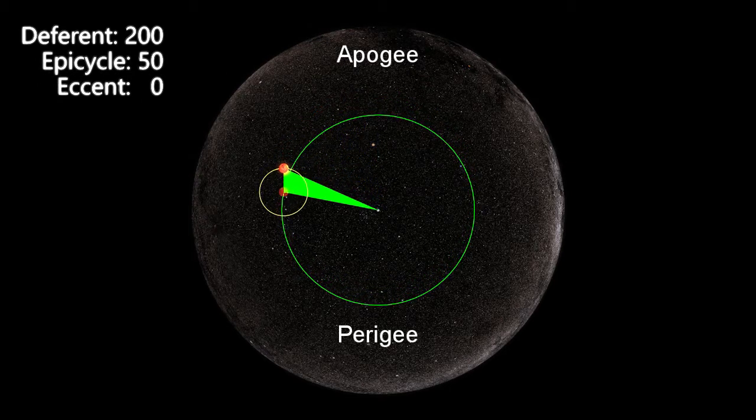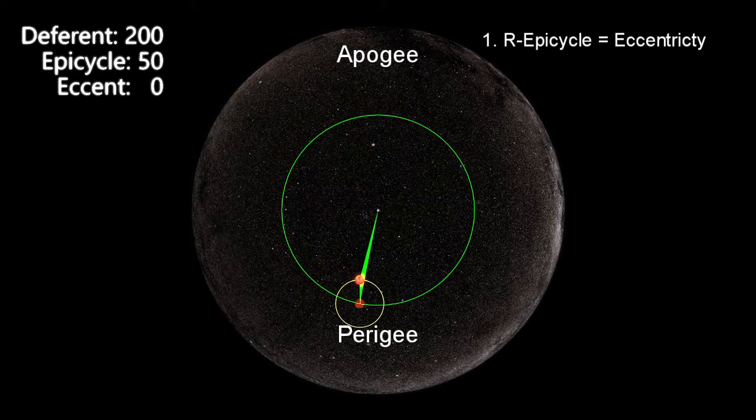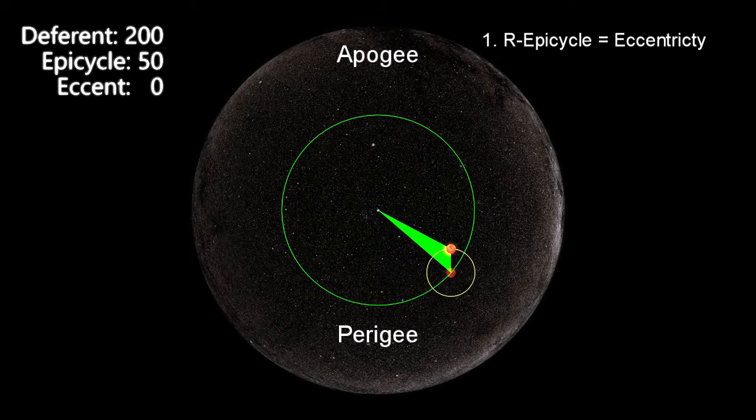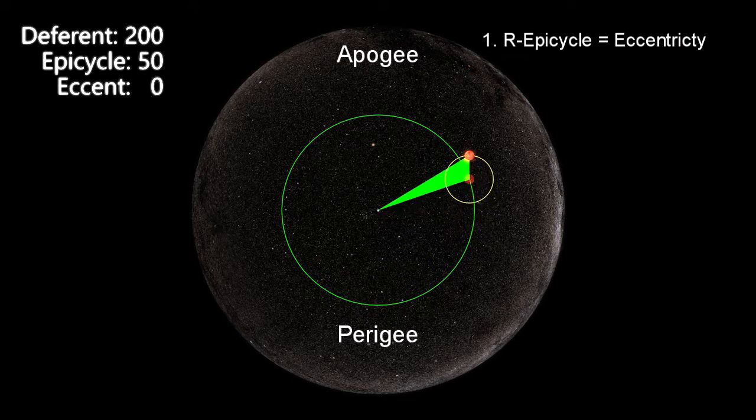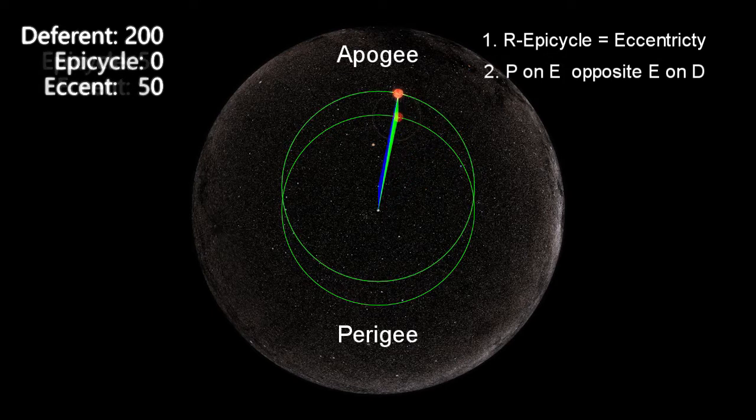Now, there are three conditions for these models to be equivalent. First, that the radius of the epicycle be equal to that of the eccentricity of the original eccentric circle. Second, that the planet travel round the epicycle in the opposite direction that the epicycle travels round the deferent.